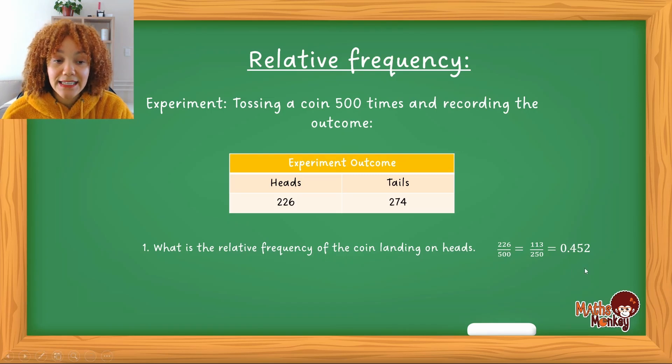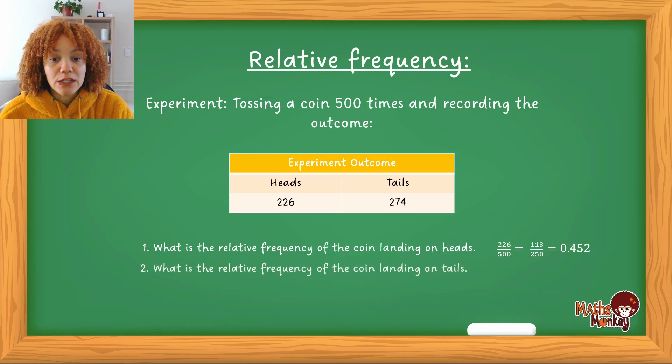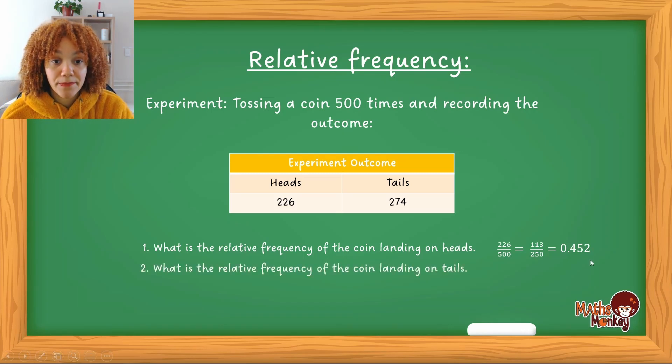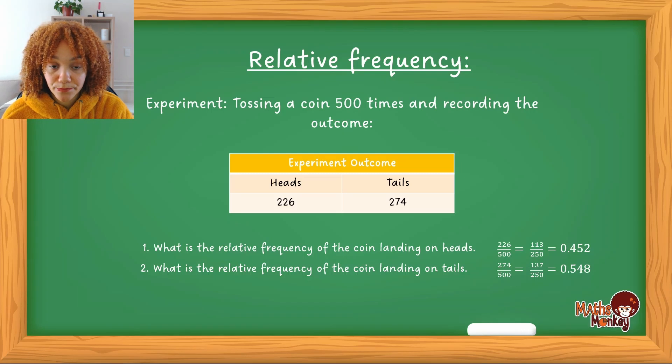Then the second one is what is the relative frequency that the coin lands on the tail? Okay so again we do the same thing where it's 274 over 500 and that's 0.548.